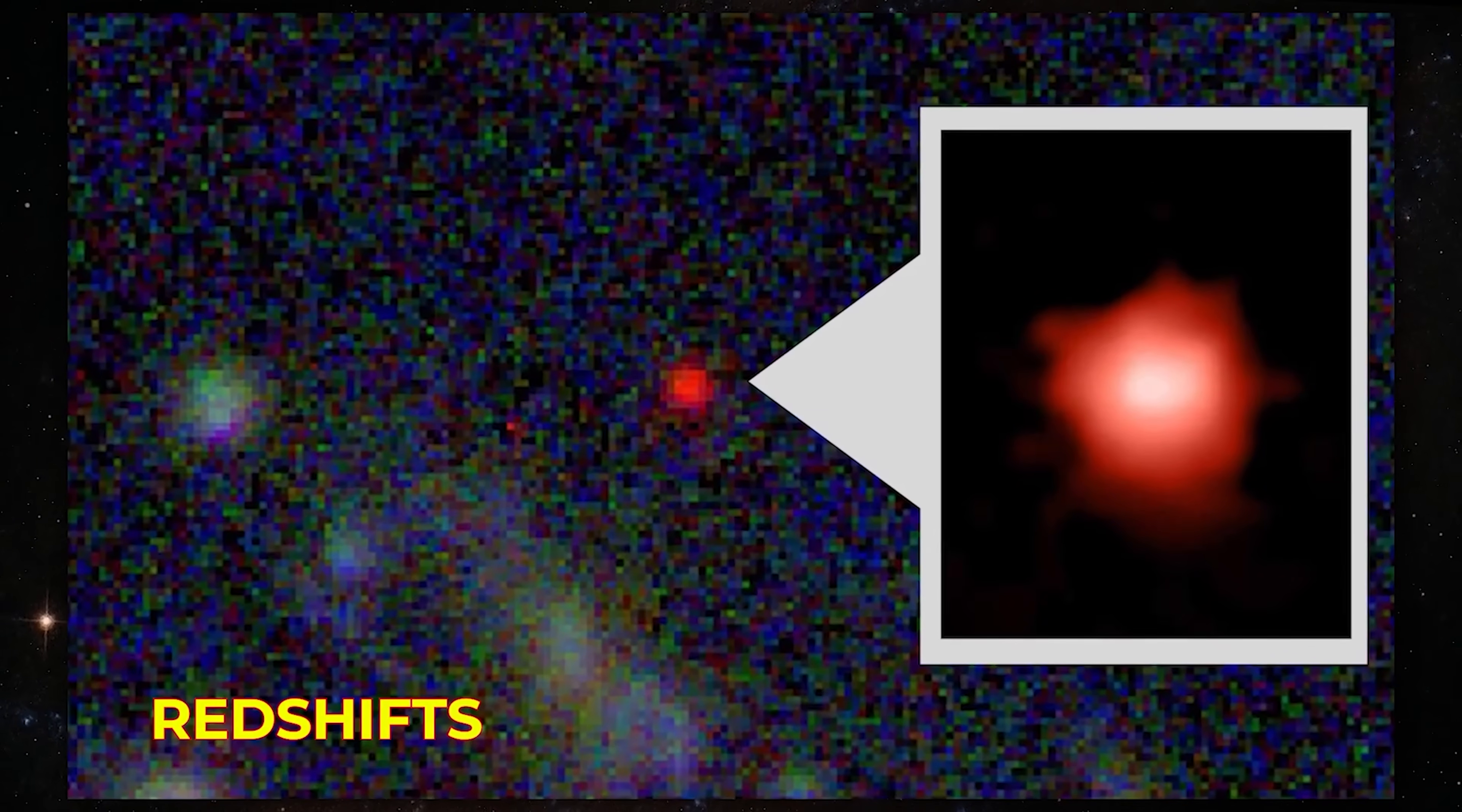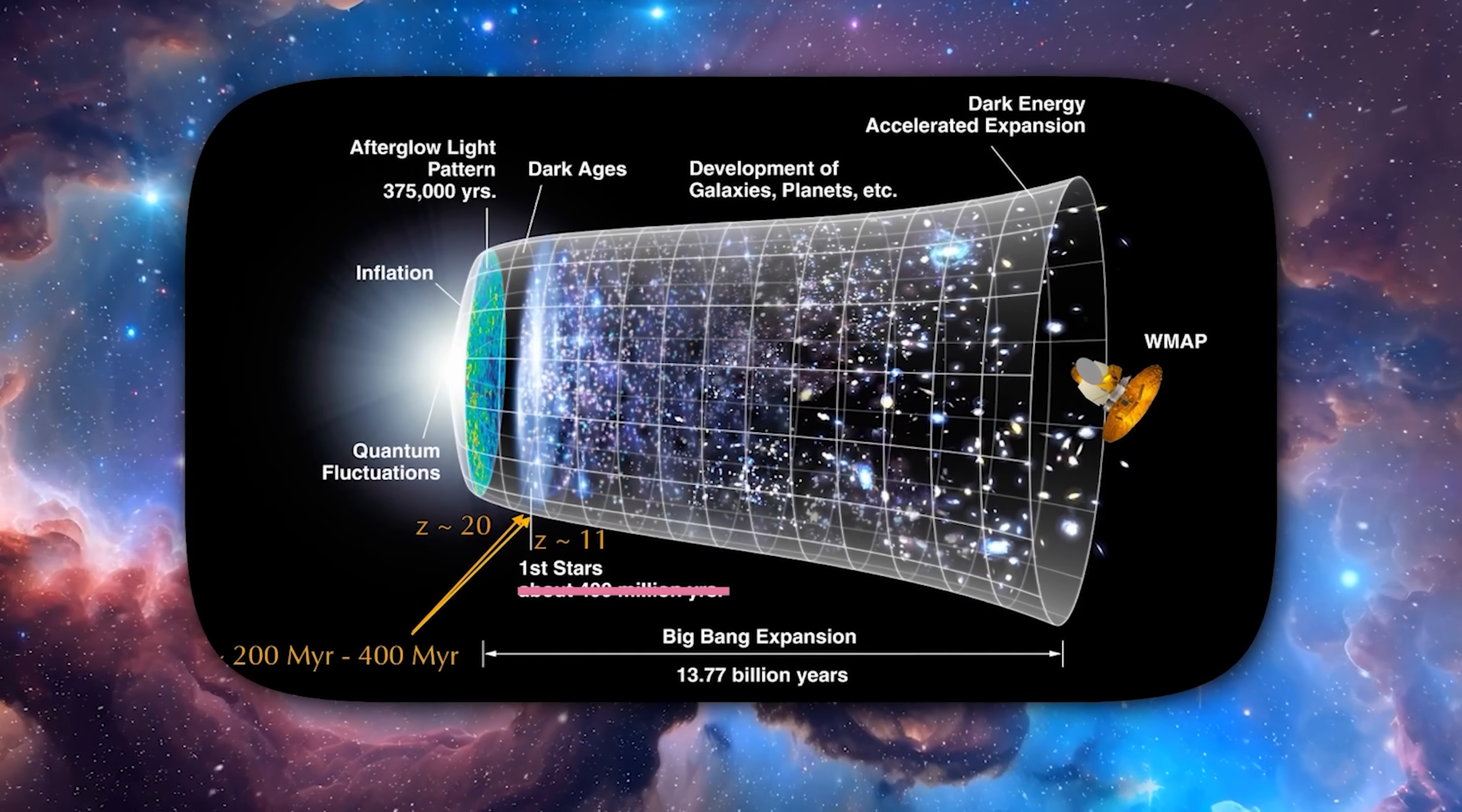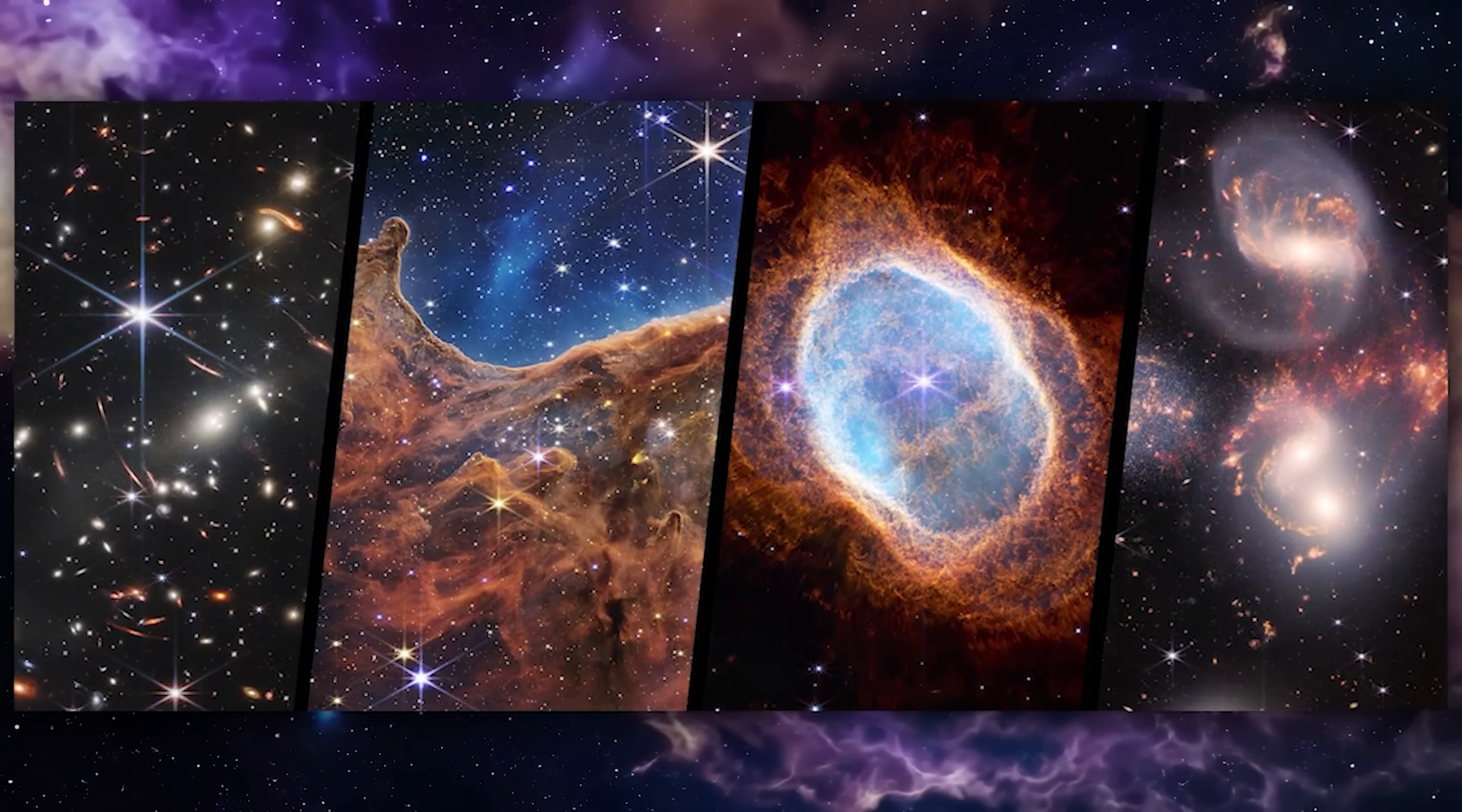If galaxies with redshifts as high as 20 truly exist, they would lie so close to the supposed beginning of time that current theories of cosmic expansion would be untenable. If Webb's findings are validated, they raise profound questions.